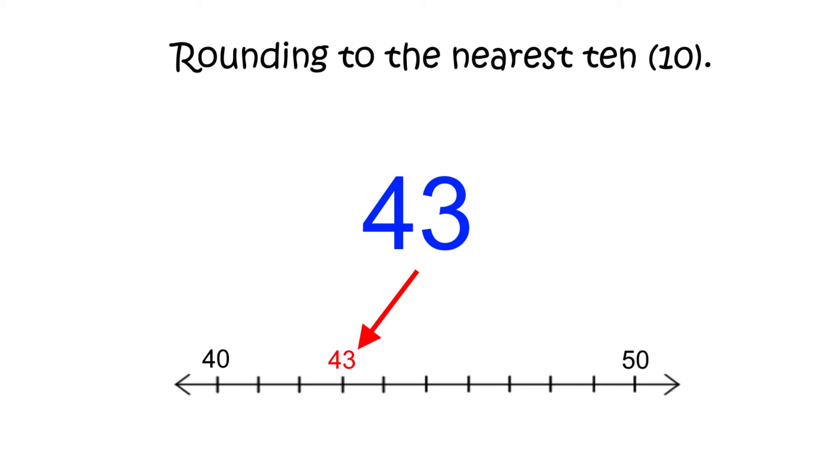To figure this out, we look at the digit to the right of the tens place. If that digit is a 5 or greater, we would round up to 50. If the digit is less than 5, then we would round down to 40.